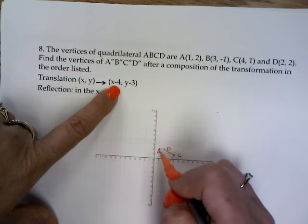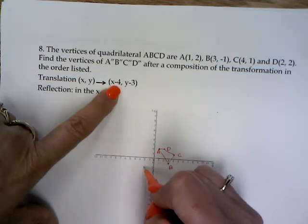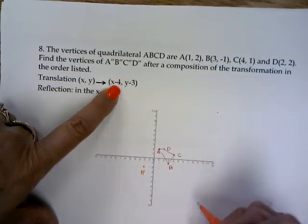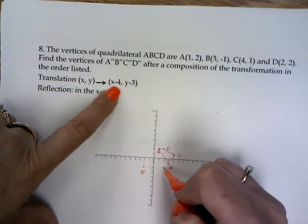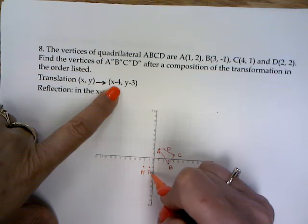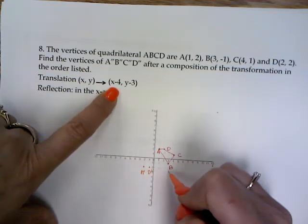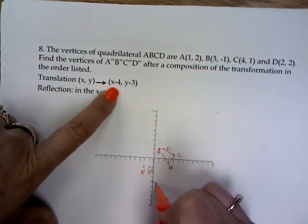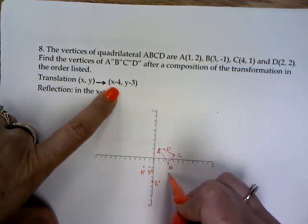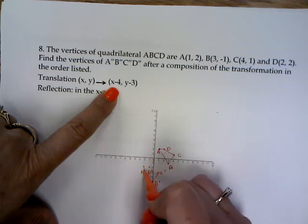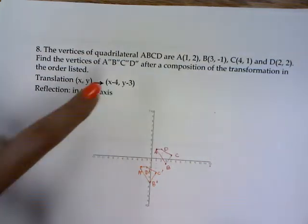So this says my first transformation is going to be a translation. So from here, I'm going to go down for left 3. So 1, 2, 3, 4. 1, 2, 3. That's A prime. 1, 2, 3, 4. 1, 2, 3. D prime. 1, 2, 3, 4. 1, 2, 3. B prime. 1, 2, 3, 4. 1, 2, 3. C prime. Here, here. There is my translation.